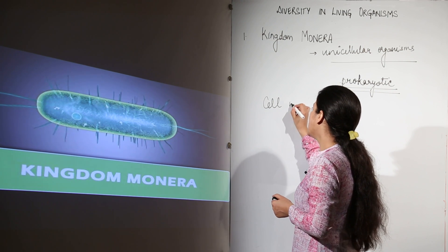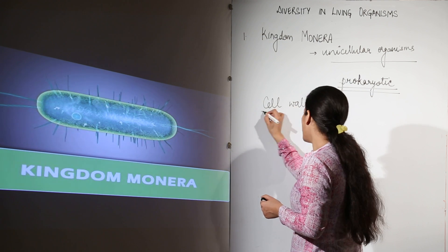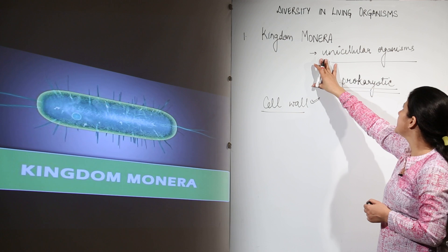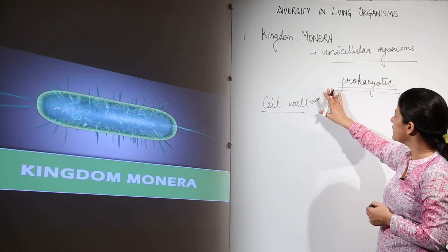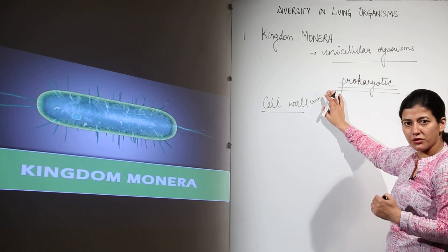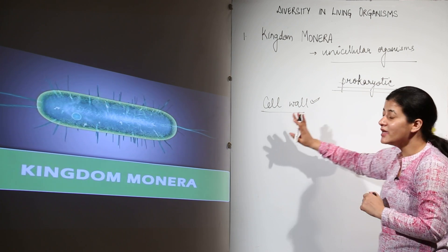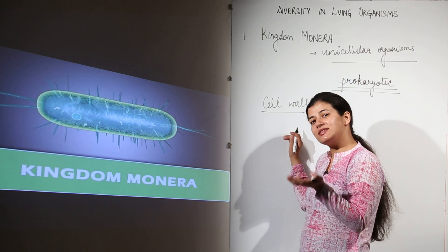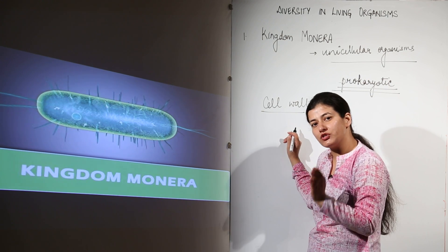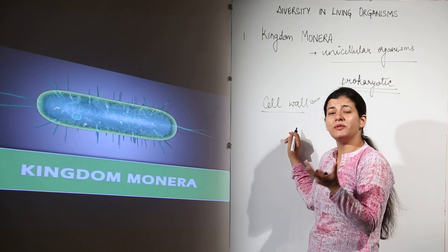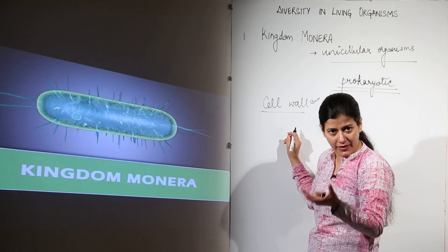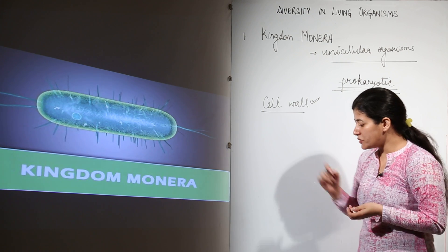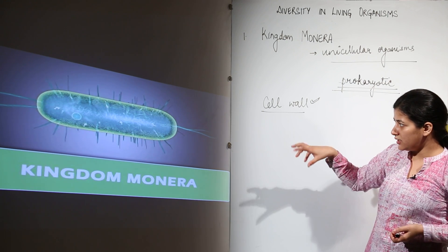The third point to remember is that the cell wall could be present or absent. So the key criteria are: first, the unicellular nature of the organism; second, it is exclusively prokaryotic; and third, the presence or absence of the cell wall, which decides the characteristics of a particular cell — and here each cell is an entire organism.